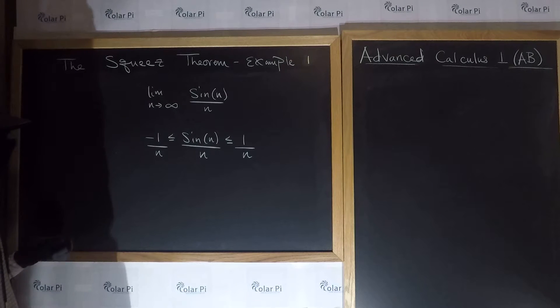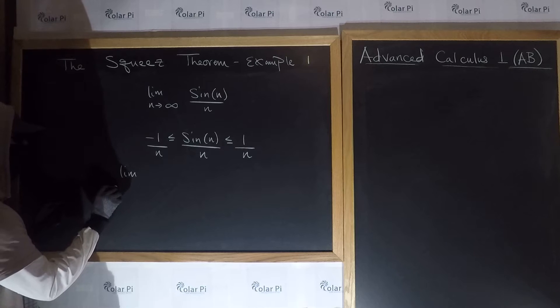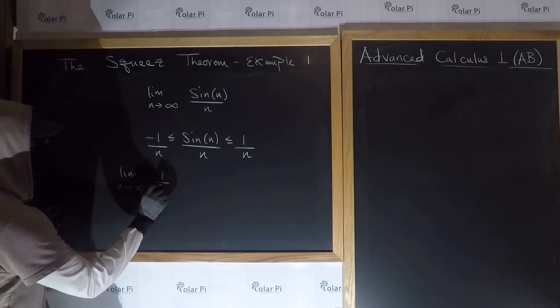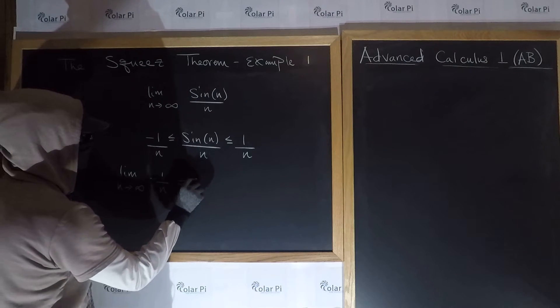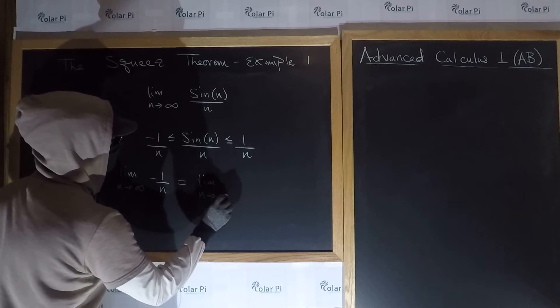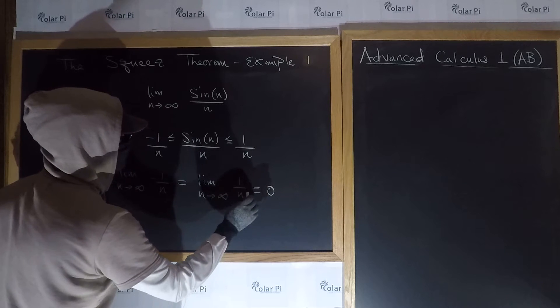Now, if I say limit as n goes to infinity of negative 1 over n, it's clear that it's going to be 0, which is the same as limit as n goes to infinity of 1 over n, which is also 0.